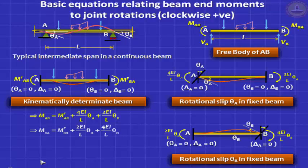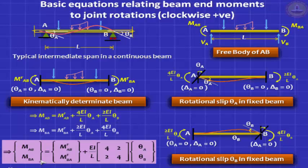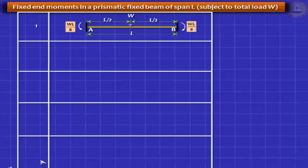This means MAB = MFAB + 4EI/L·theta A + 2EI/L·theta B, and MBA = MFBA + 2EI/L·theta A + 4EI/L·theta B. These are the simplest slope deflection equations. You can write them in matrix form, pulling out the unknowns theta A and theta B to the right side. For any given loading you can write down MFAB and MFBA, and if someone gives you theta A and theta B you can immediately find MAB and MBA. Note that all rotations and moments — theta A, theta B, MAB, MBA, MFAB, MFBA — are assumed clockwise positive; if negative, the actual direction is anti-clockwise.